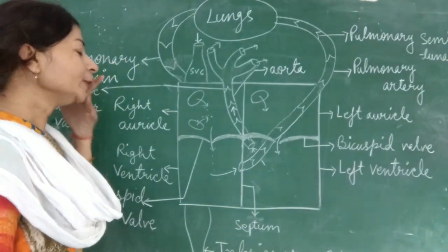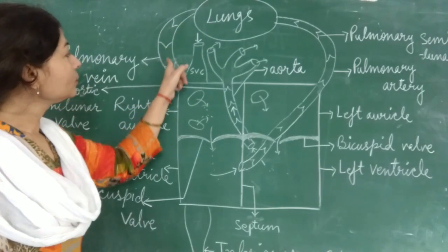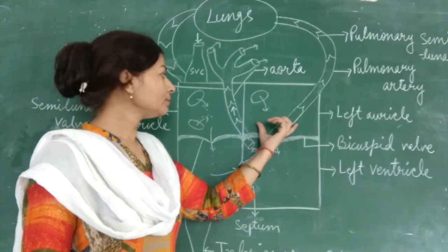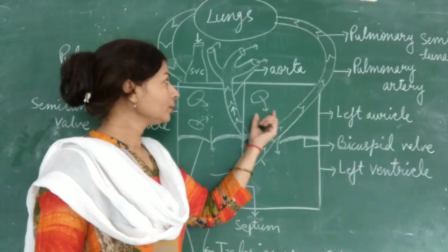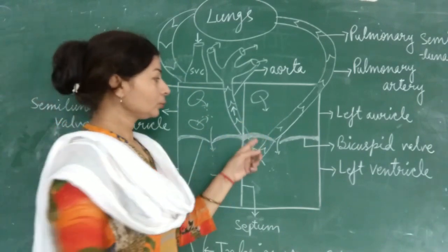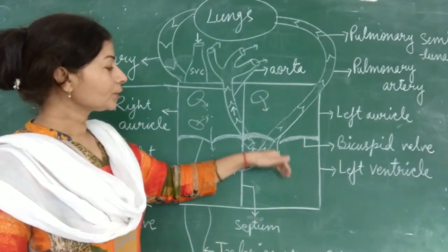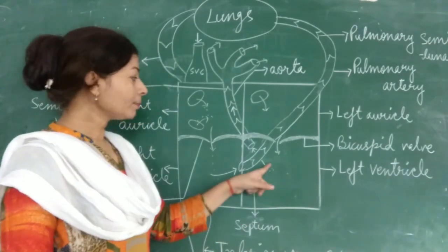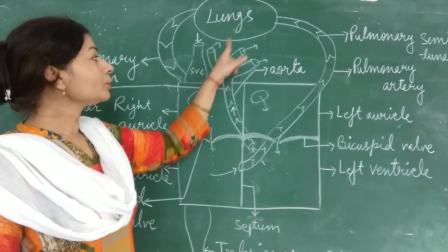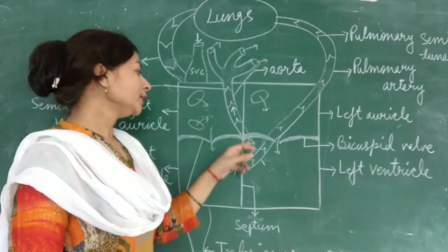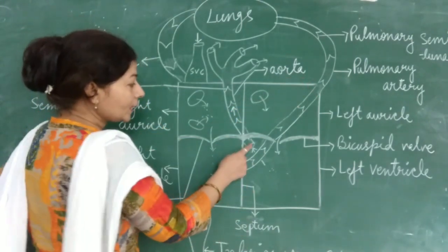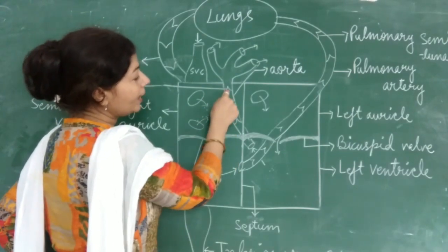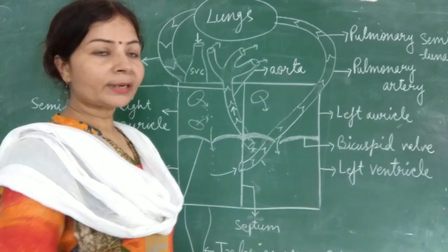These valves are called semilunar valves because they are shaped like a half-moon. When the blood from the lungs comes through the pulmonary vein into the left auricle — it is a receiving chamber — it receives the pure blood through the pulmonary vein. Then through the bicuspid valve the blood enters into the left ventricle. When the left ventricle is filled with blood, the blood passes from the left ventricle to the parts of the body through the biggest artery of the body.